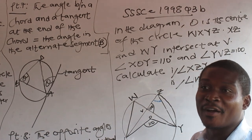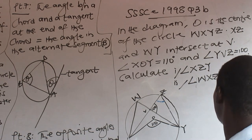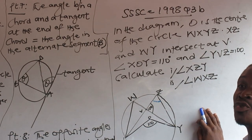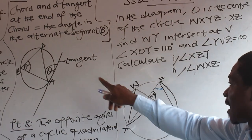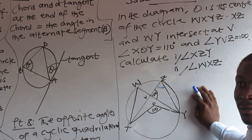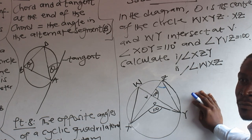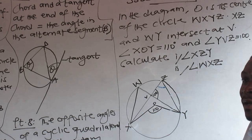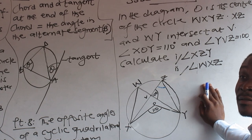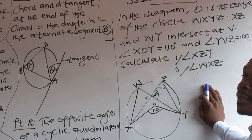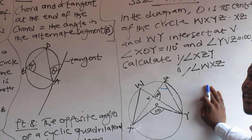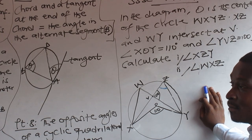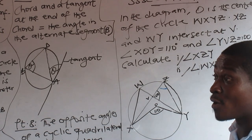Now, how do we solve this? The first thing is to look for what you have and identify the theorems hidden in the drawing. Once you release one, the rest will follow. If you cannot identify one, you cannot finish the work. What property have we seen here? We have seen Property two.